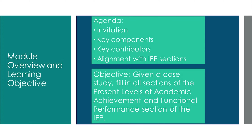And we'll finish by addressing how this section aligns with and drives each later section of the IEP. At the end of this module, you'll be able to fill in all components of the present levels of academic achievement and functional performance section of the IEP for a transition-aged student.